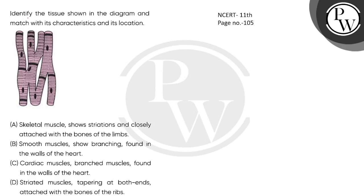Hello children, let's see this question. Identify the tissue shown in the diagram and match with its characteristics and its location. This is what you are looking at - you are looking at branching, and this is what you are looking at: intercalated disc.